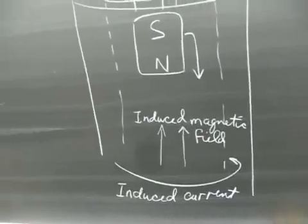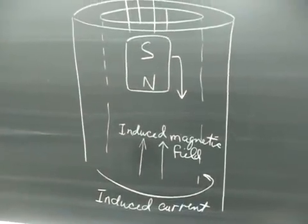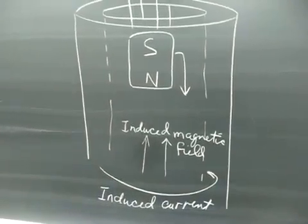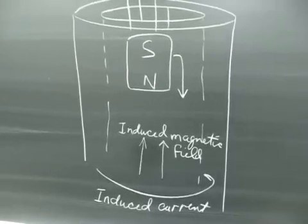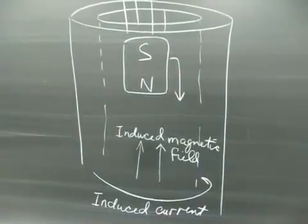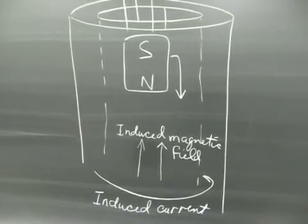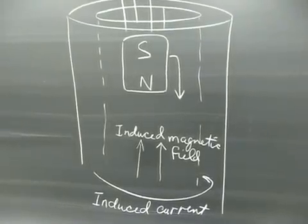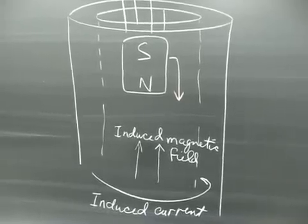Now, if this were a perfectly superconducting tube, what would happen is the magnet would never fall any further. But it takes energy to cause that current to flow. And as a result, the energy has to come from somewhere. It is sucked out of the mechanical motion of the falling magnet. So, all of that gravitational potential energy it has stored in it is robbed by that induced current.